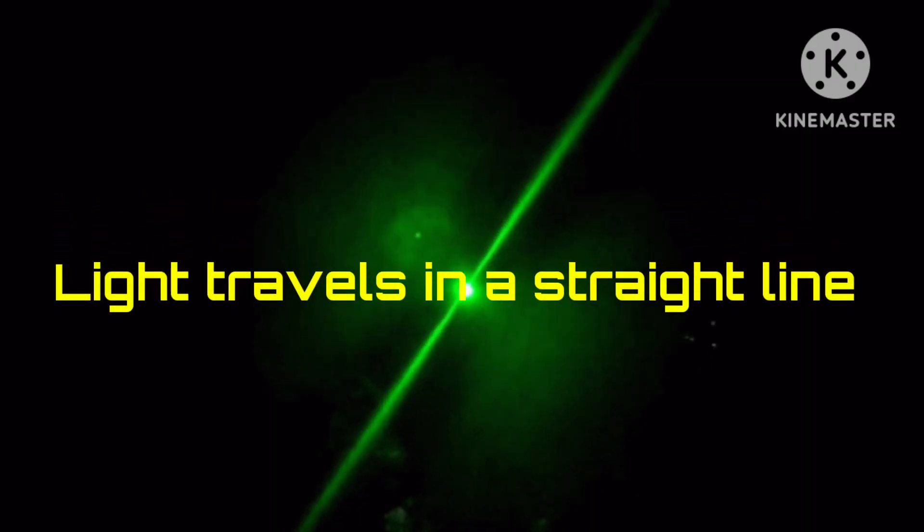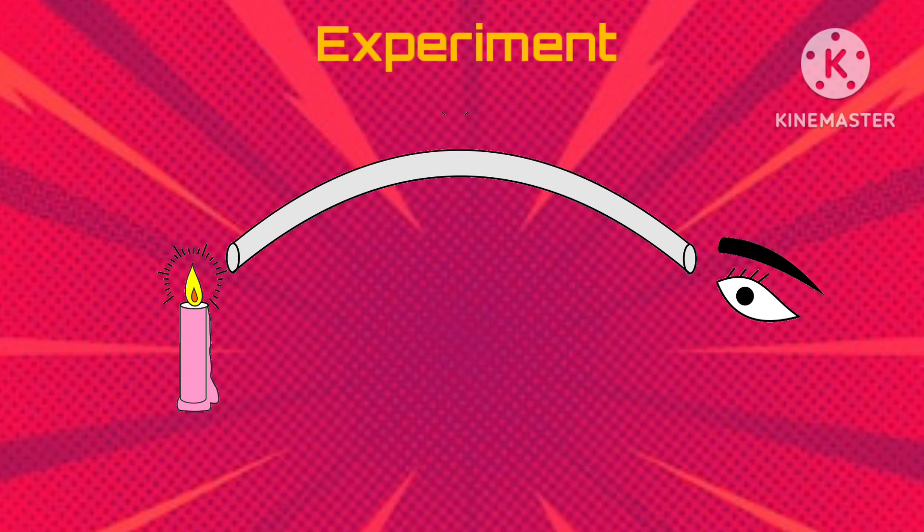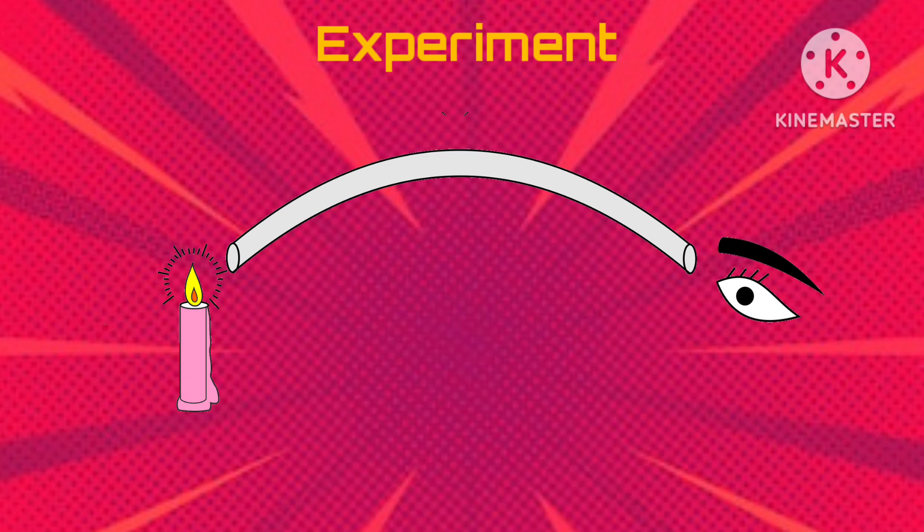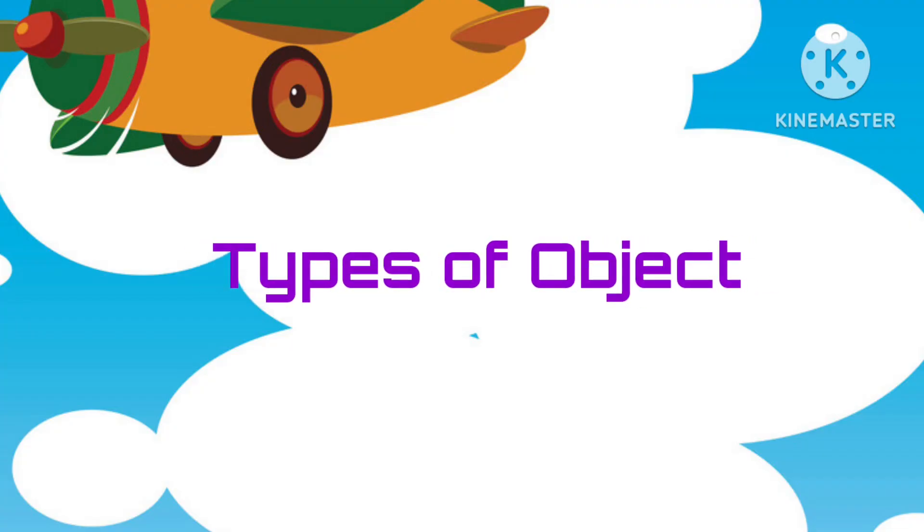Hey, do you know that light travels in a straight line? Let's do an experiment and see. Take a cylindrical tube which can be easily bent. Now try to see a candle through it. You will be able to see the candle through it. Now take the same tube and bend it at some angle. But this time you will not be able to see the candle. Why? Because light travels in a straight path. Now let's see types of objects.